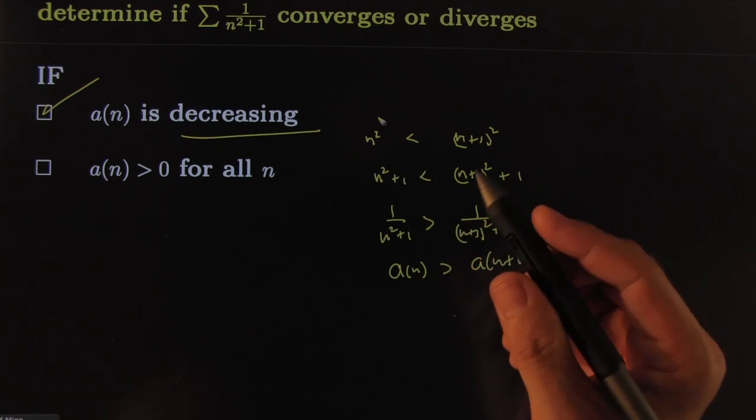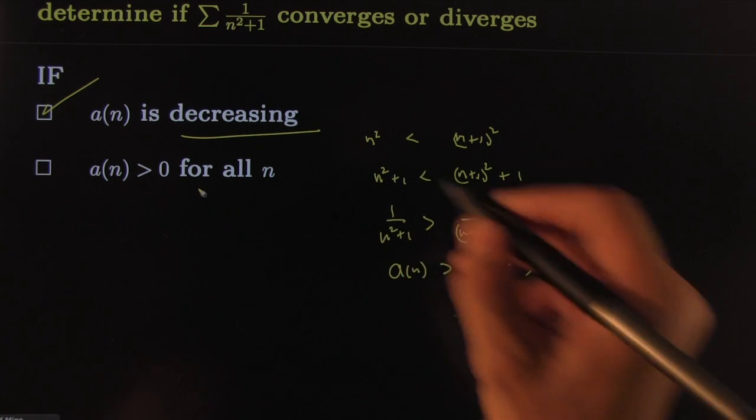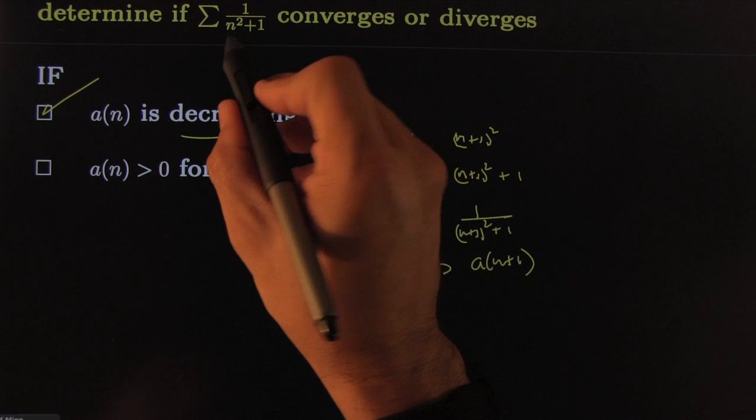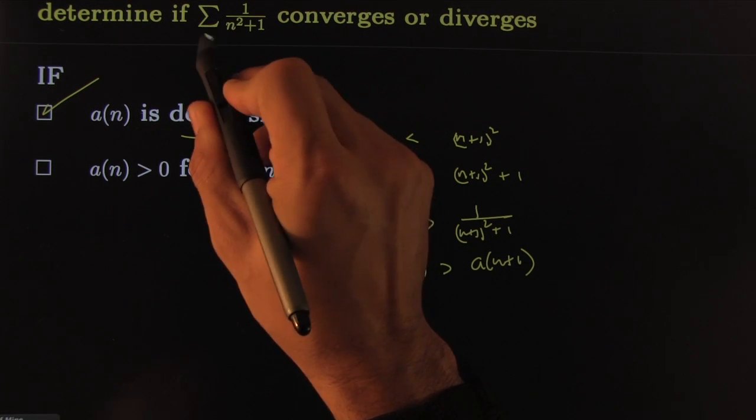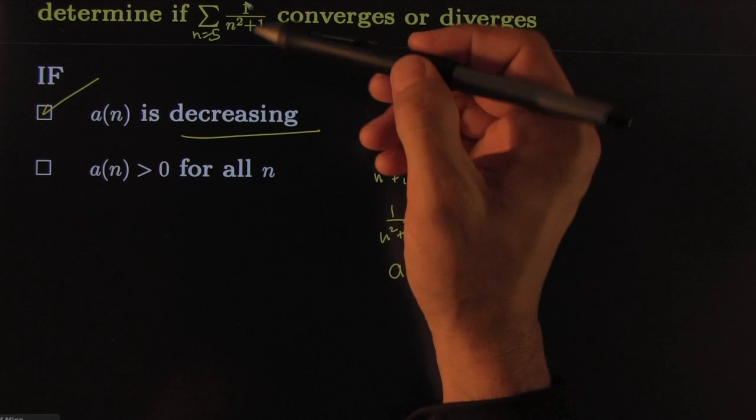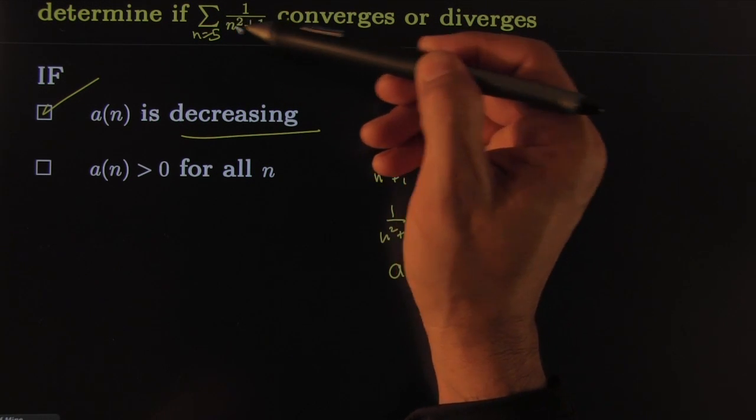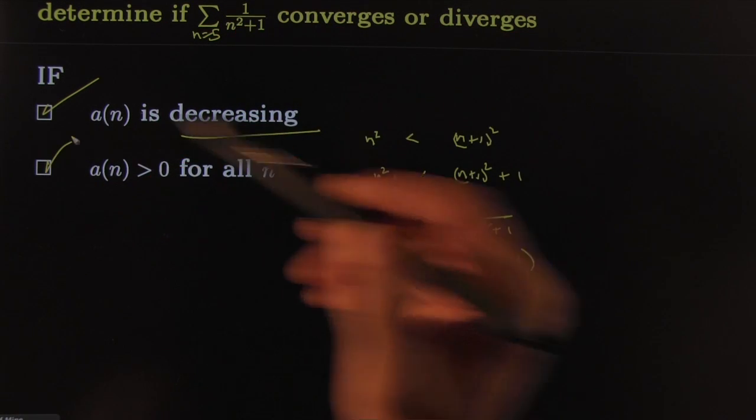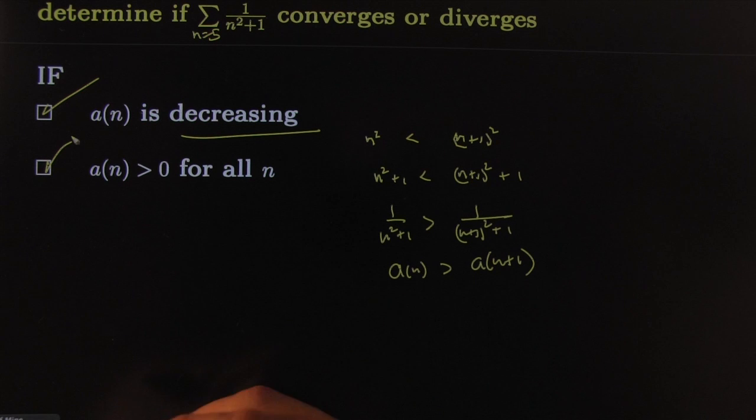All right, that shows that it's decreasing. Then we need to show that it's positive. Well, that's silly - n is positive. We only care for large n's, and for n greater than five or whatever, this is positive. Of course all your n's are going to be positive, and that's all we need.